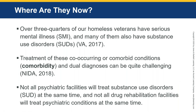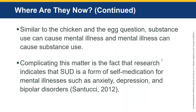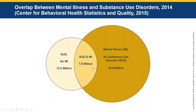Over three-quarters of our homeless veterans have serious mental illness, and many also have substance use disorders. Treatment of these co-occurring or co-morbid conditions and dual diagnoses can be very challenging — substance use facilities do not always treat psychiatric diseases, and psychiatric facilities don't always treat substance use disorders. Similar to the chicken and the egg, substance use can cause mental illness and mental illness can cause substance use. Recent research indicates substance use disorder is a form of self-medication for mental illnesses such as anxiety, depression, and bipolar disorders. About 7.9 million people suffer from both diseases.